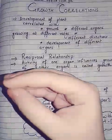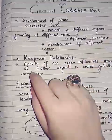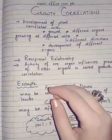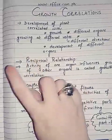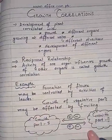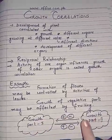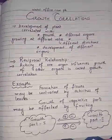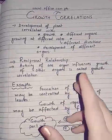So we can say that growth correlation is nothing but the growth of one part affecting the growth of the other part. If one part affects the growth of the other part, this is known as growth correlation. It is a reciprocal relationship — if one grows faster, the other will be slower. I have drawn a diagrammatic indication that the growth in part one and the growth in part two may affect each other in a positive or negative manner.